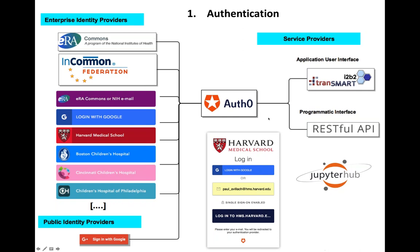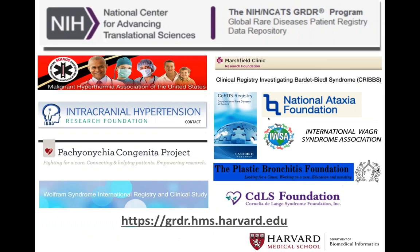For authentication, in order to make sure that we don't store any passwords, we use an identity manager like Odzio that enables us to have multiple enterprise identity providers like Google, Facebook, or multiple enterprise institutional providers hooked to the system. This allows all the different applications — from the I2B2 user interface to TransMart, our RESTful API, or JupyterHub — to be hooked to this identity provider, so we know who someone is without storing any password. Now I'm going to show you multiple projects where you can access today this data so you can test our platform and see the benefit of having both the I2B2 and TransMart platform.